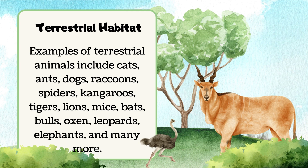Examples of terrestrial animals include cats, ants, dogs, raccoons, spiders, kangaroos, tigers, lions, mice, bats, birds, bulls, oxen, elephants, and many more.